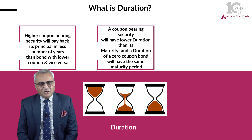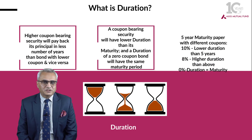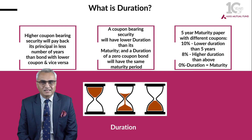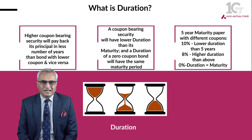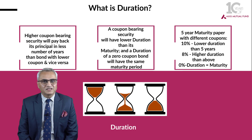Let me conclude on duration with an example of a 5-year maturity paper with different coupons. A 10% coupon will have a lower duration than an 8% coupon, and naturally a 0% coupon bond of 5-year maturity — the duration of that will be equal to its maturity, which is 5 years in this case.